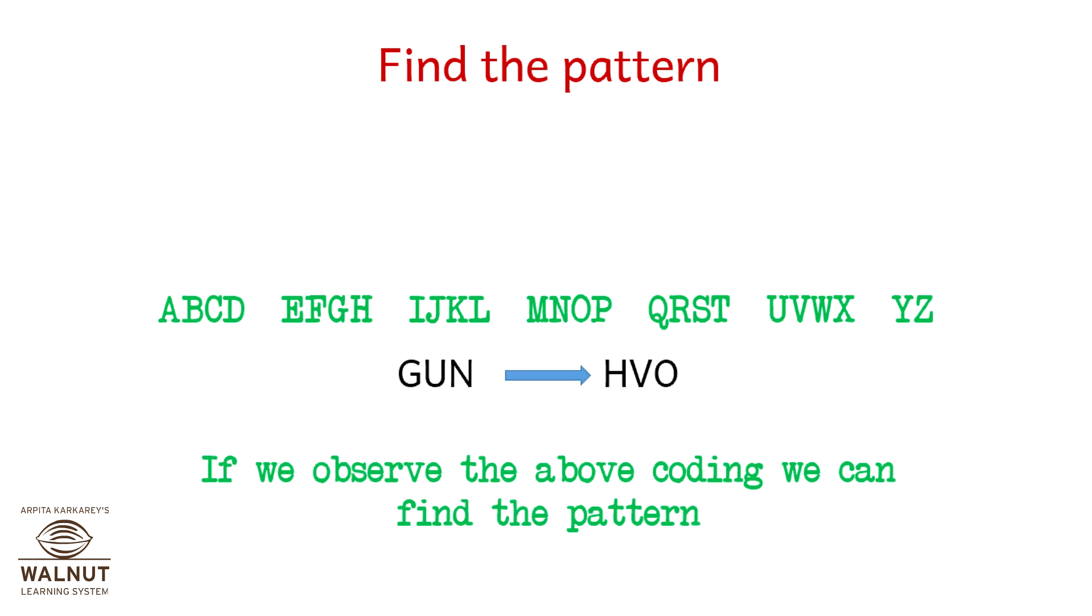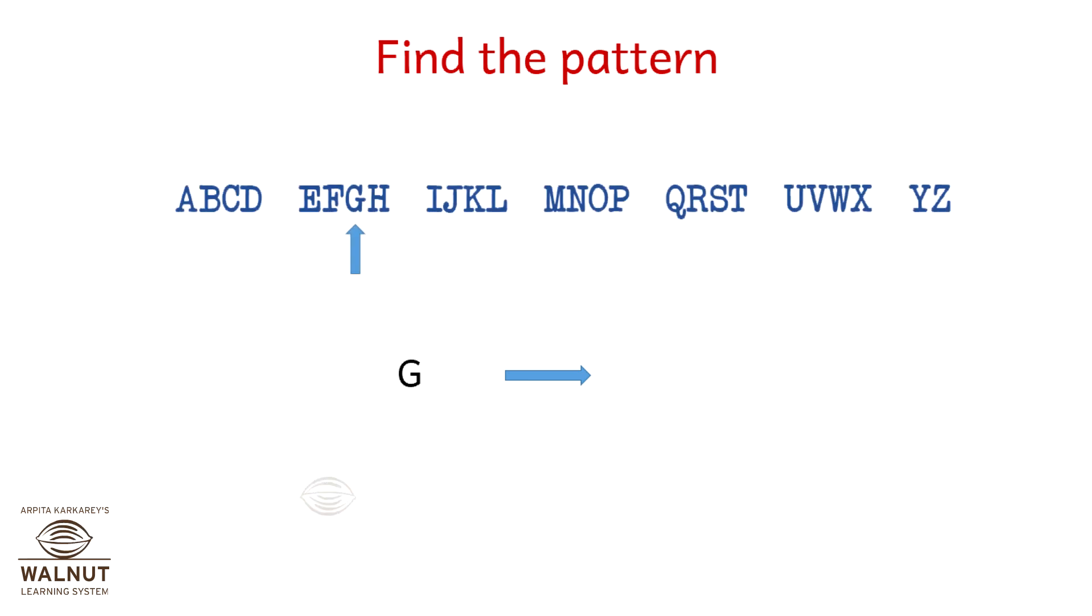Now we write GUN and draw an arrow to HVO. Observing the above coding, we need to identify the pattern.